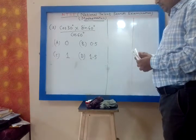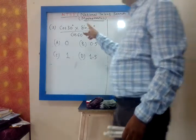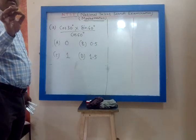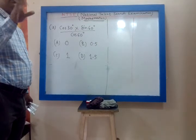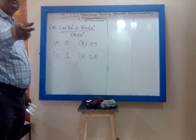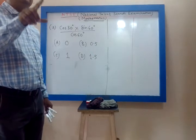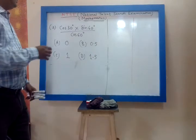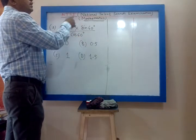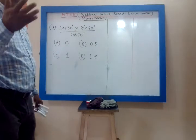We can solve this by two methods. This is a problem of trigonometry. We have studied trigonometric ratios and trigonometric ratios of standard angles — 0 degree, 30 degree, 45 degree, 60 degree, and 90 degree. For these standard angles we already have a table.